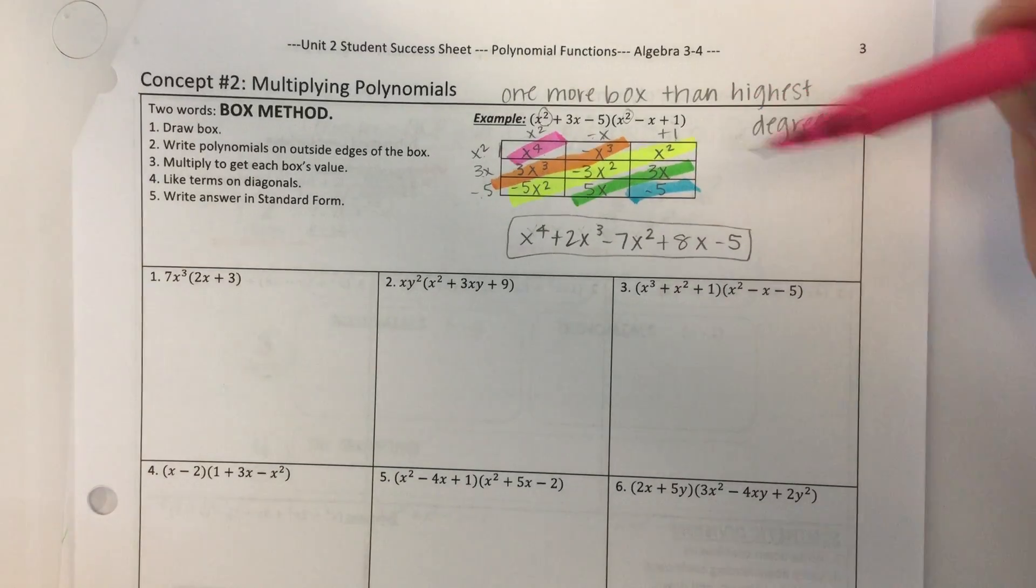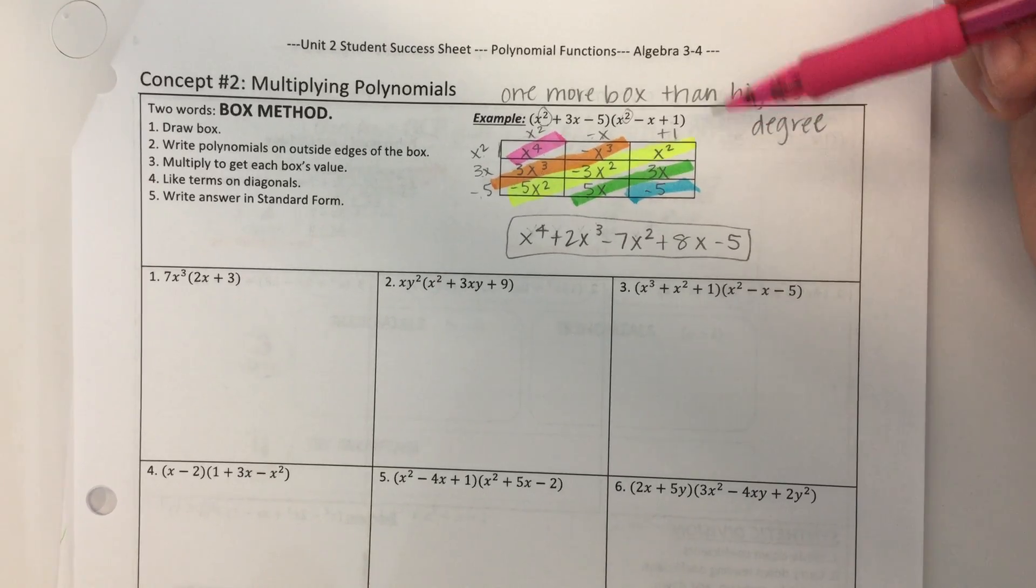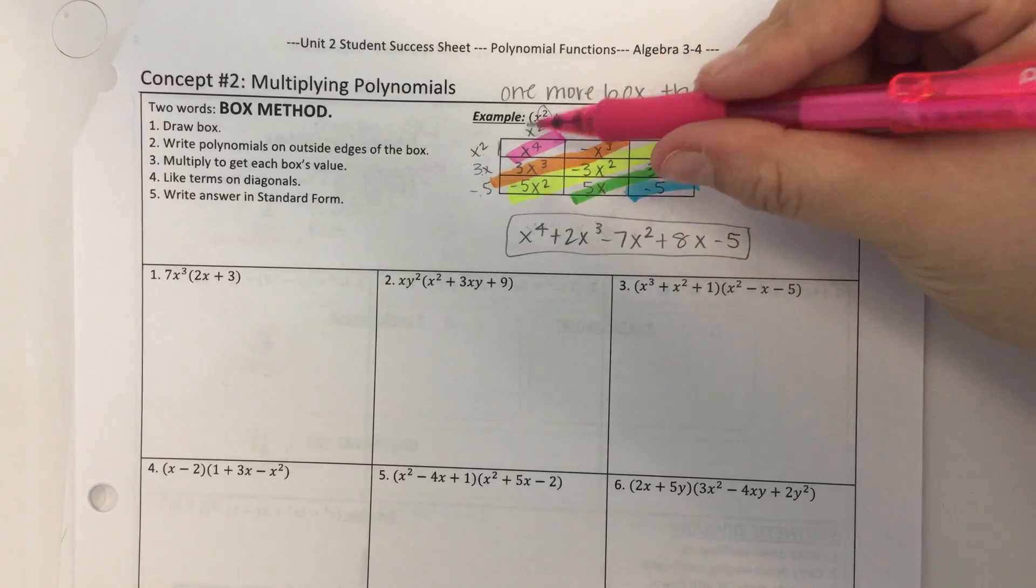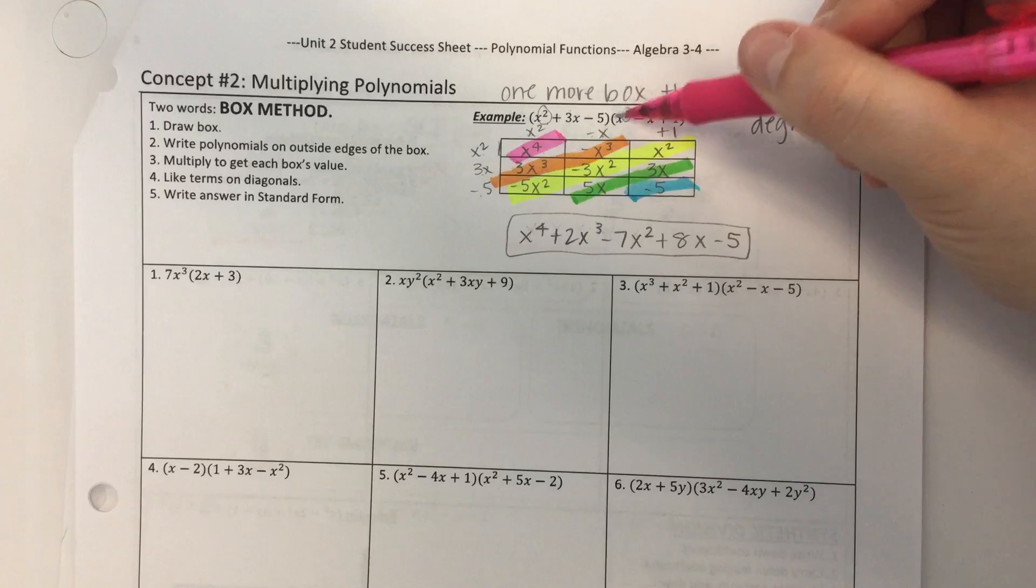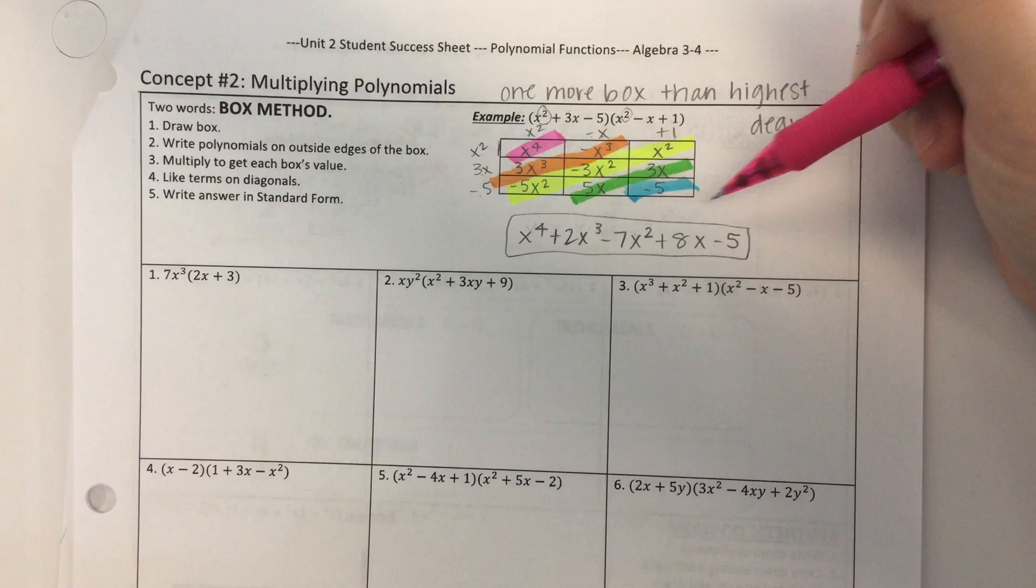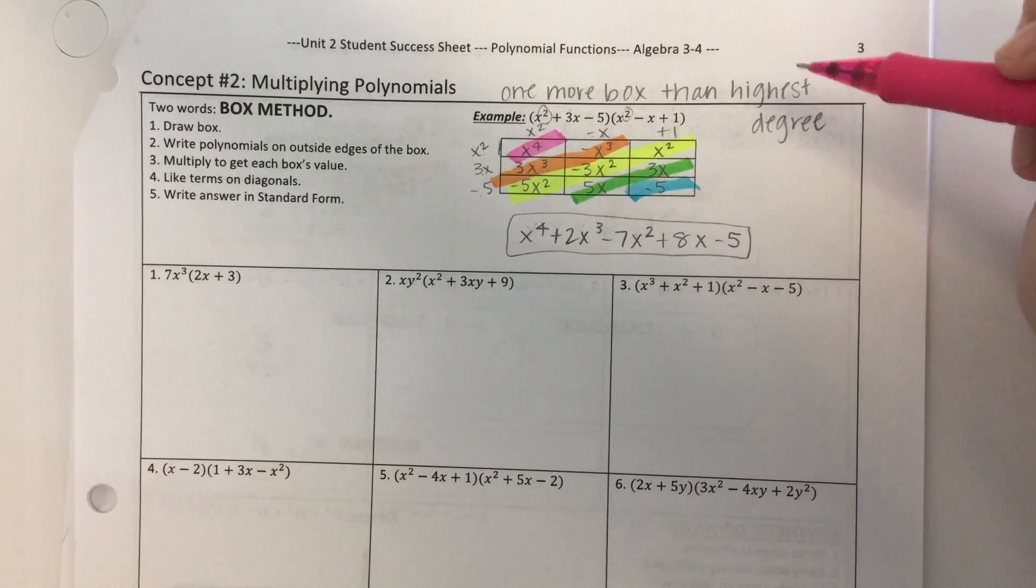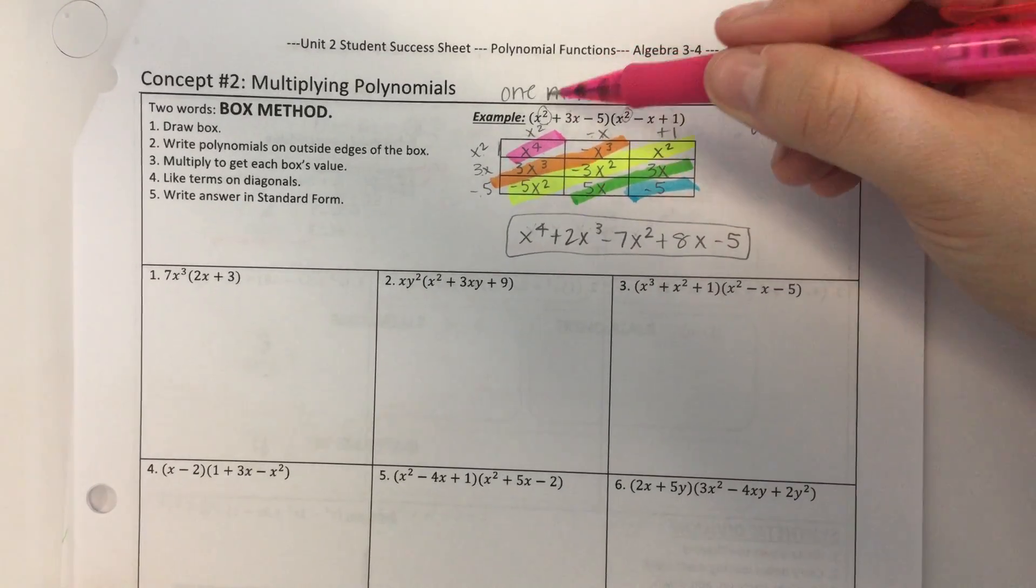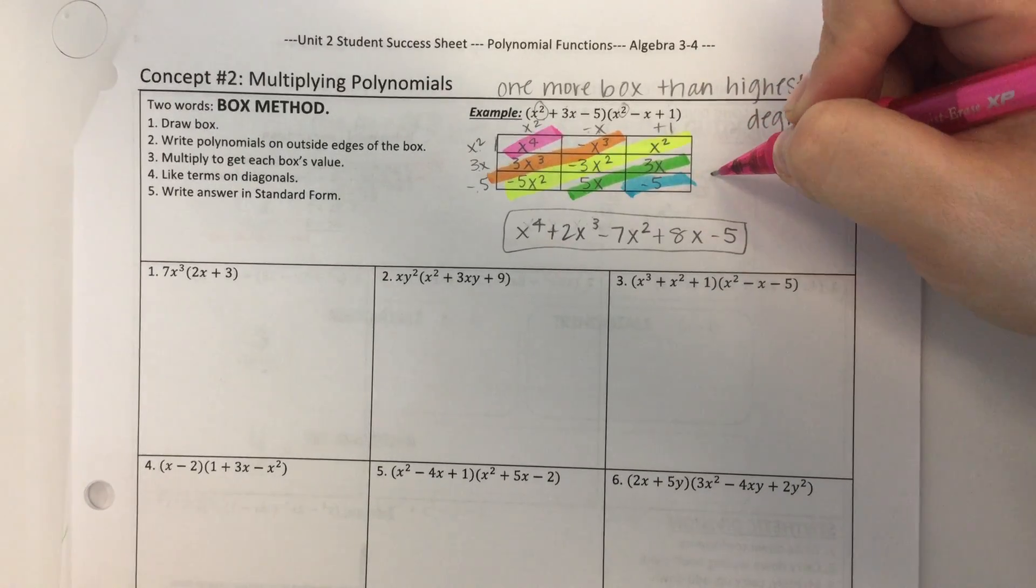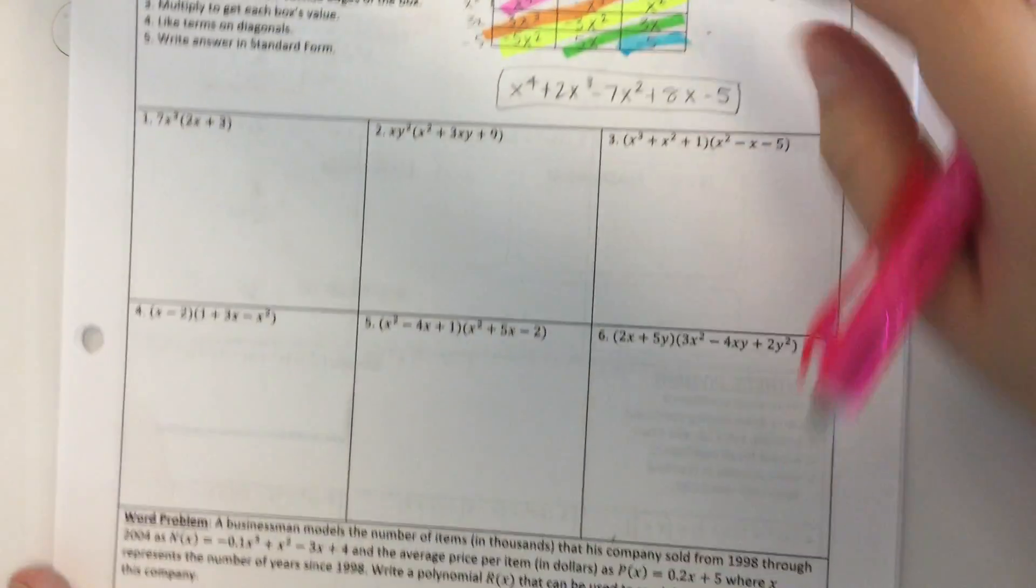Another way you could have done this that I think is way more complicated and it's way harder to keep track of is you could just foil it over and over again. You can go x squared times x squared, x squared times negative x, x squared times 1, and then do the same thing with 3x and negative 5. Some people really like that. I prefer the box because I'm very visual. I like seeing the colors, I like seeing the organized. But it's up to you. If you would like me to show you the other way, you can come see me. But in this video, we're going to do the box method. So I'm going to do 1, 2, and 3 in the next video, and then 4, 5, and 6 in the one after that.